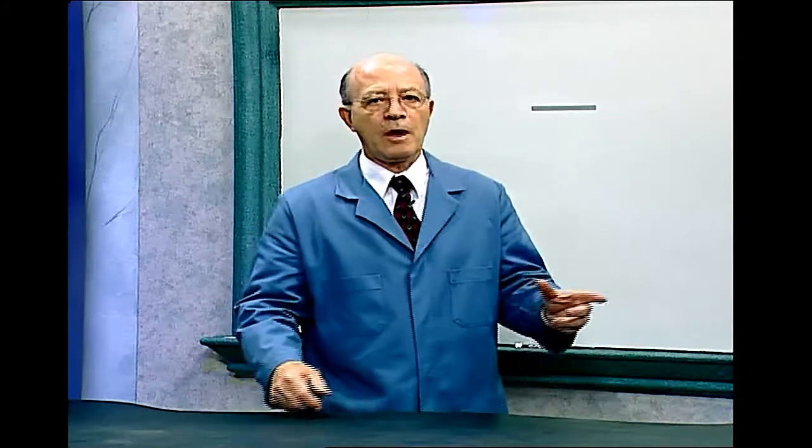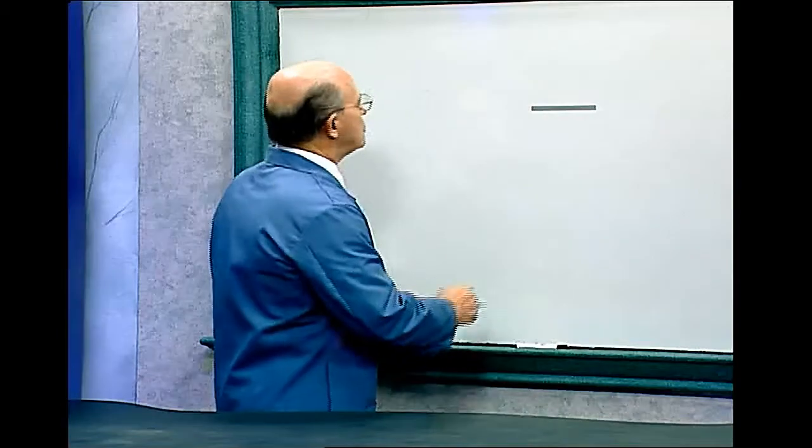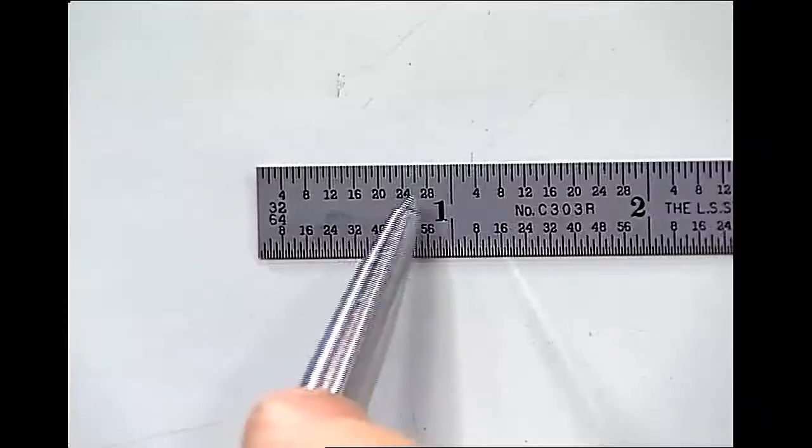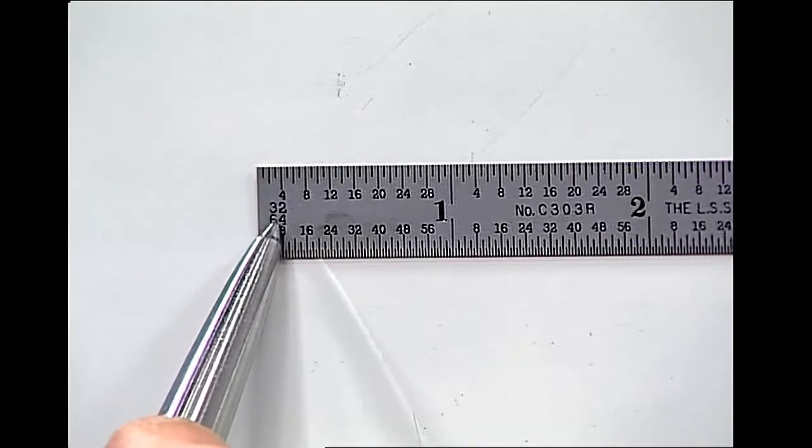Here is a ruler on the board that is divided into thirty-seconds as you can see on the top, and on the bottom is sixty-fourths. You see right over here, thirty-two and sixty-fourths.